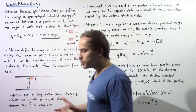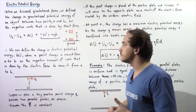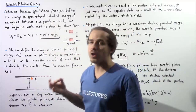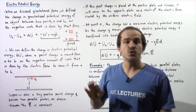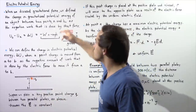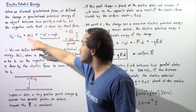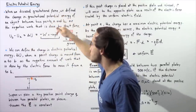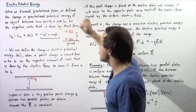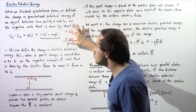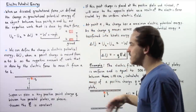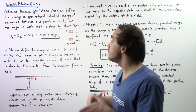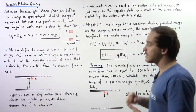By definition, work is equal to force multiplied by displacement. In this case, our displacement is H and the force is the force of gravity, so force equals mass times the gravitational constant G. Therefore, the change in U equals negative M times G times H. As the object travels from position A to B, it loses gravitational potential energy, which is transformed into the kinetic energy of the object.